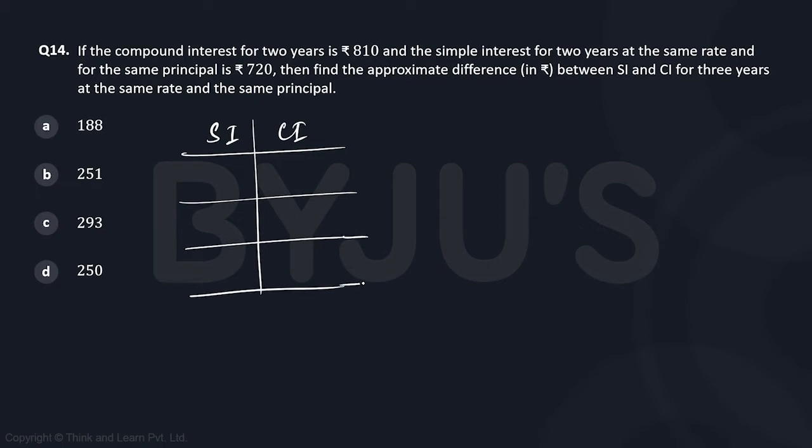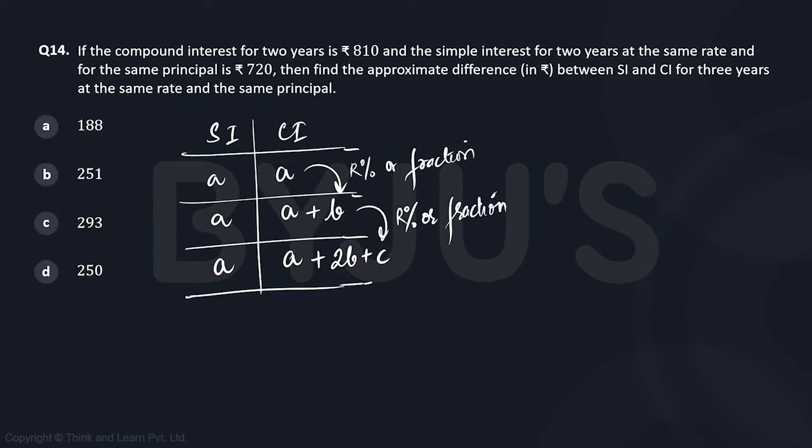For simple interest and compound interest relation when principal and rate of interest are same: for simple interest the interest is throughout a. For compound interest it's a, a, a. In the second year you have a plus b, in the third year you have a plus 2b plus c. The way a and b are related by whatever percentage or fraction, the same percentage or fraction is how b and c are related. So we are going to use this table to make the calculation easier.